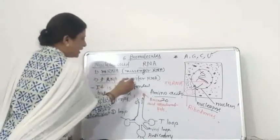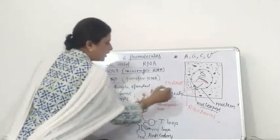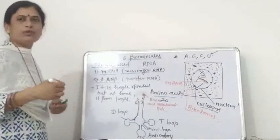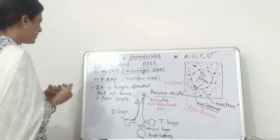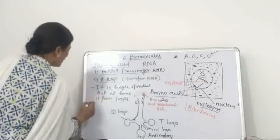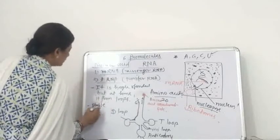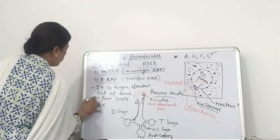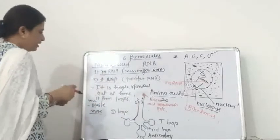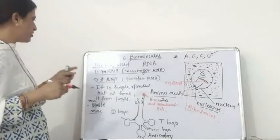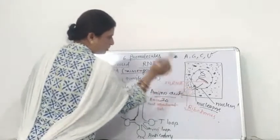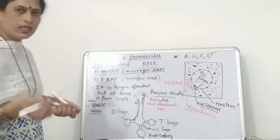This tRNA transfers the amino acid to the ribosomes for the process of protein synthesis. This tRNA is a stable, more stable molecule. It is more stable because at some points it forms a looped structure. It functions to transfer the amino acid from the cytoplasm to the ribosomes or to the site of protein synthesis.